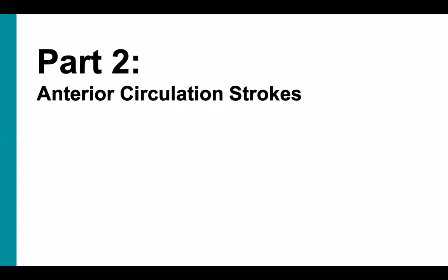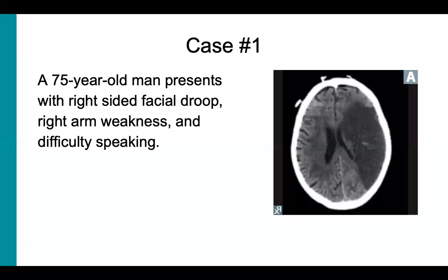So part two, let's start things off with a case. A 75-year-old man presents with right-sided facial droop, right arm weakness, and difficulty speaking. Part of the CT scan is shown here on the right. So which artery do you think is involved?